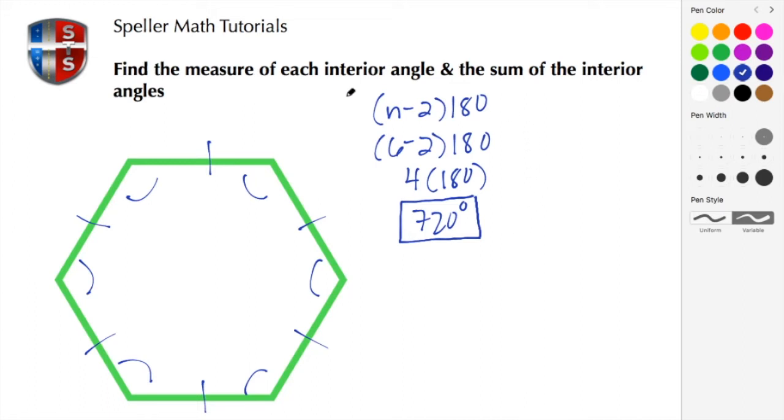Next, we need to find the measure of each individual angle. To do that, we take the total measure of the interior angles and divide it by the number of sides. In this case, it's six sides, so we divide 720 by 6. 6 goes into 7 one time with 1 left over, making it 12. 6 goes into 12 two times, and 6 into 0 zero times. So the measure of each angle is 120 degrees.